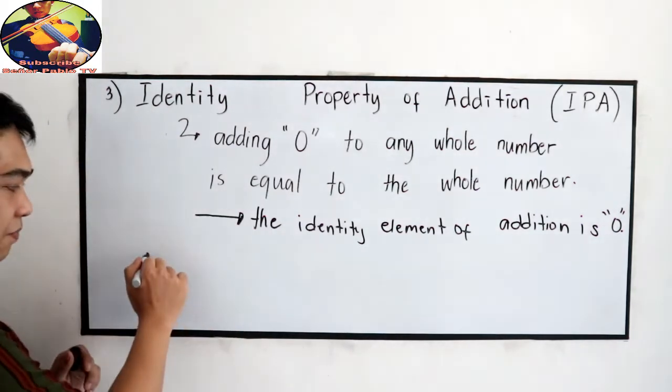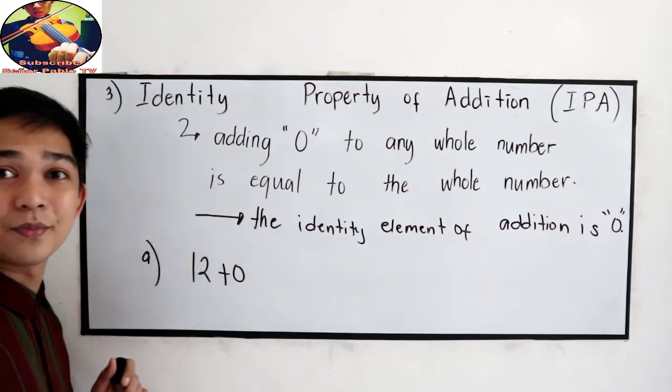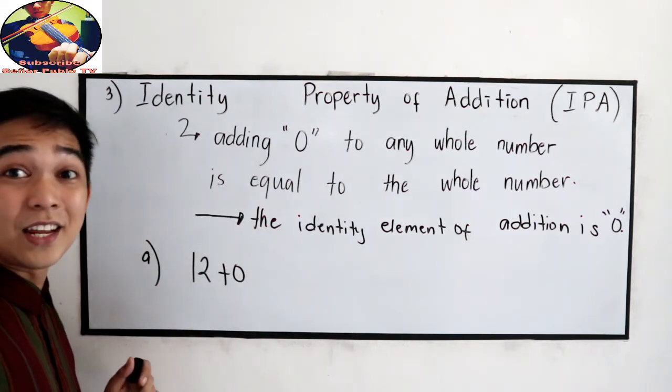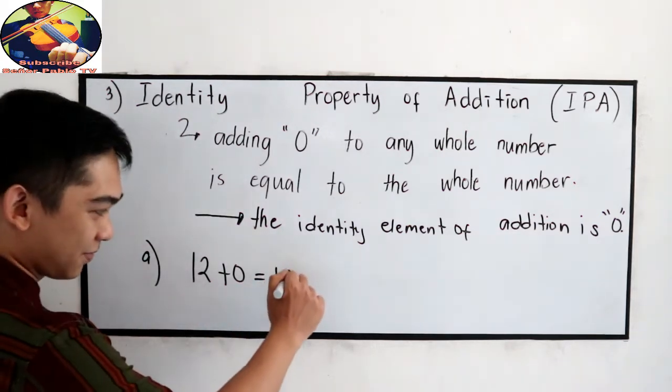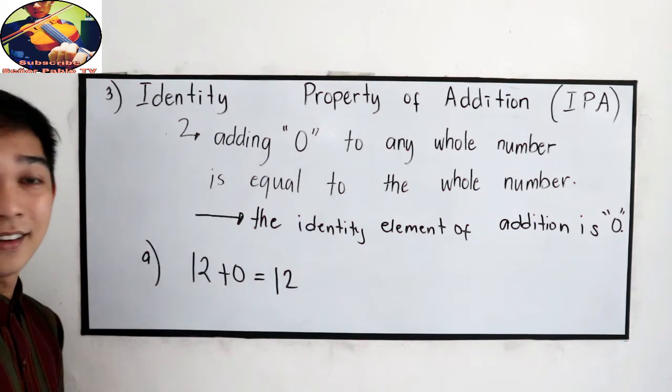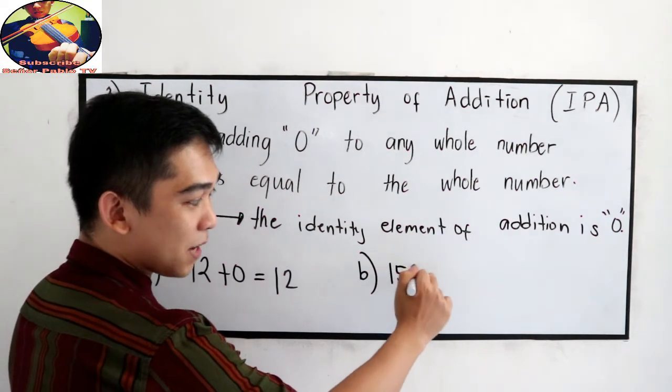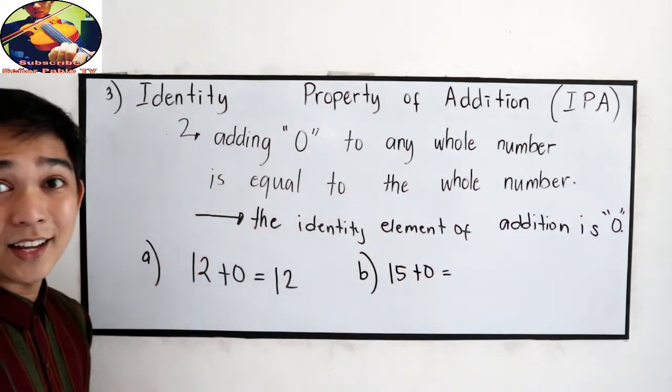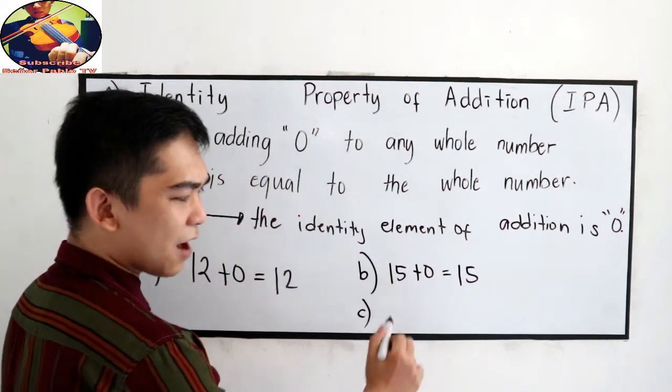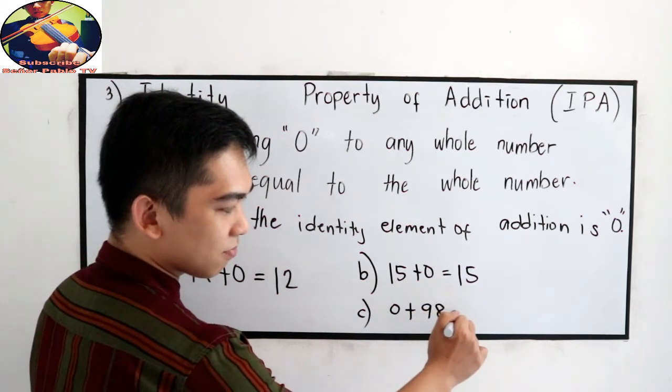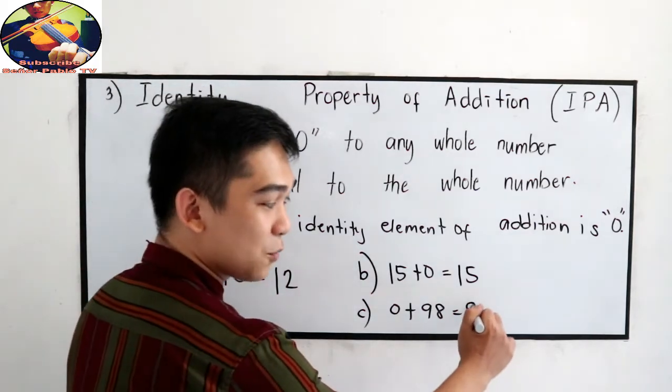Let's say we have 12 plus zero. Any number added to zero is equal to that number, which is 12. Let's say we have 15 plus zero. That is 15. What if we have zero plus 98? 98 plus zero is still the whole number, which is 98.